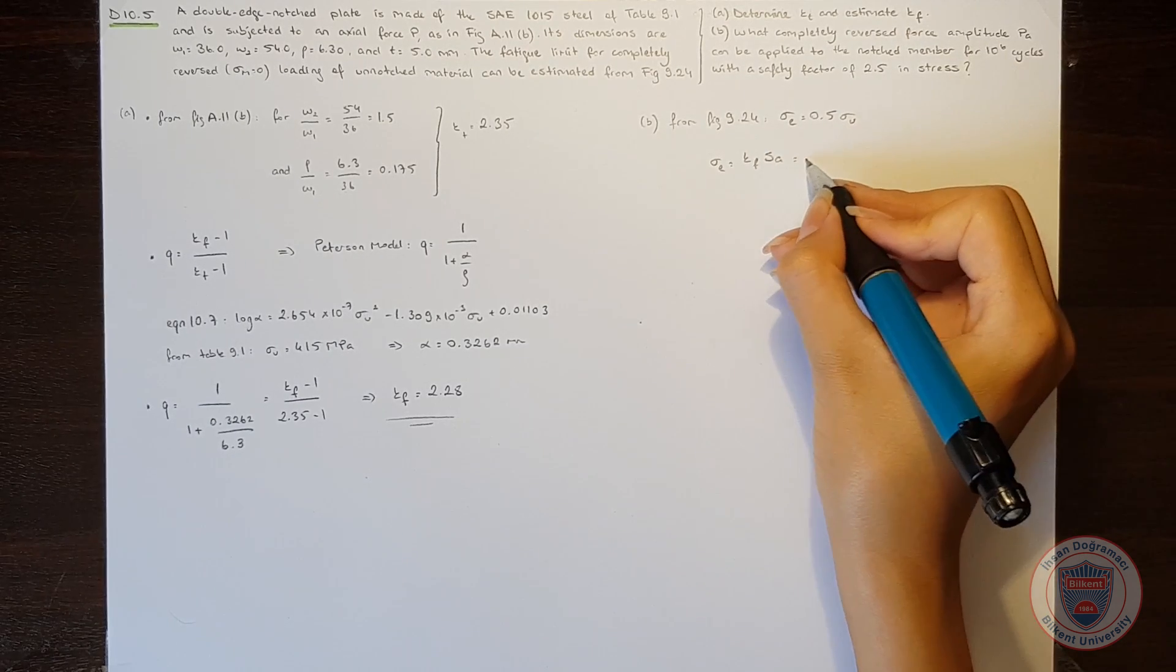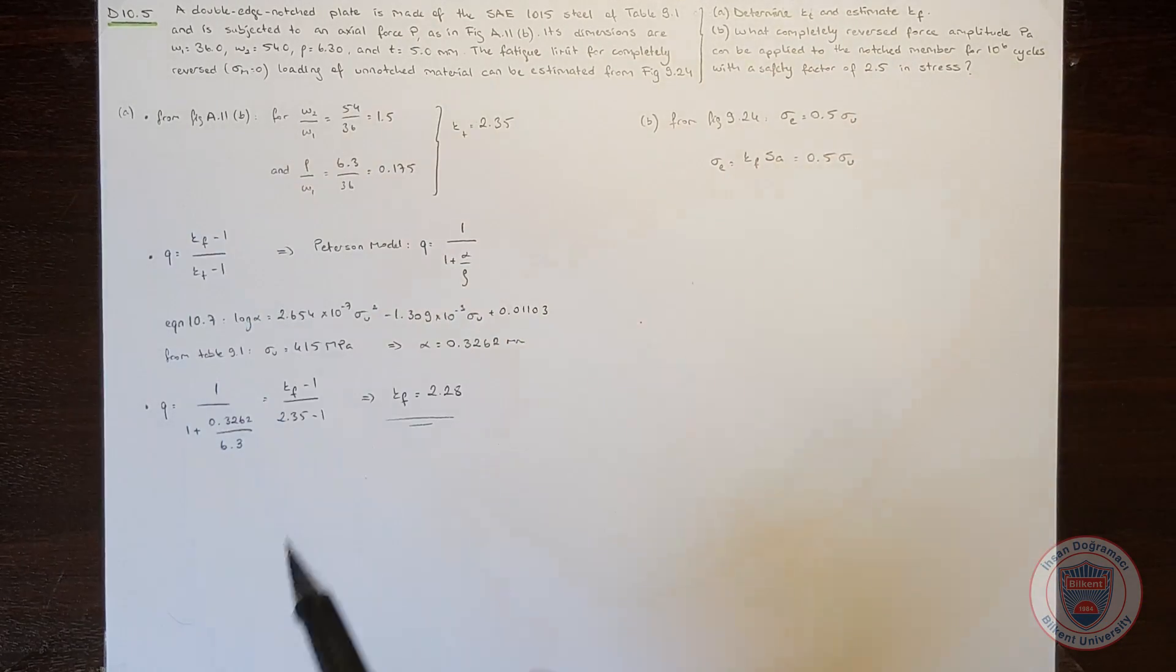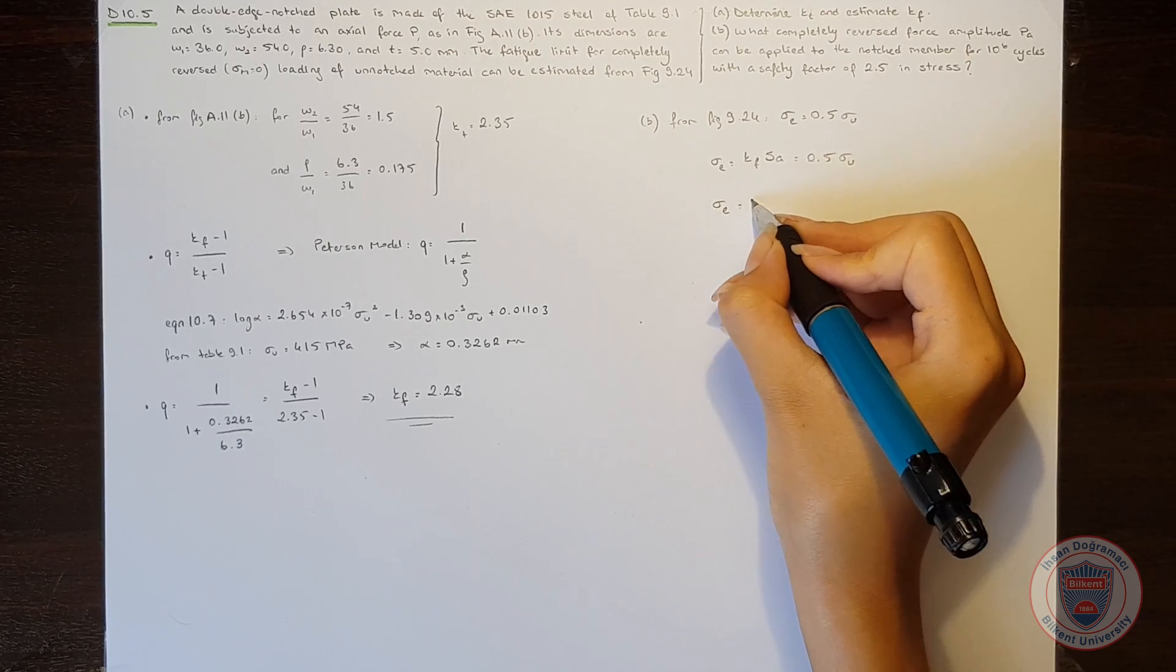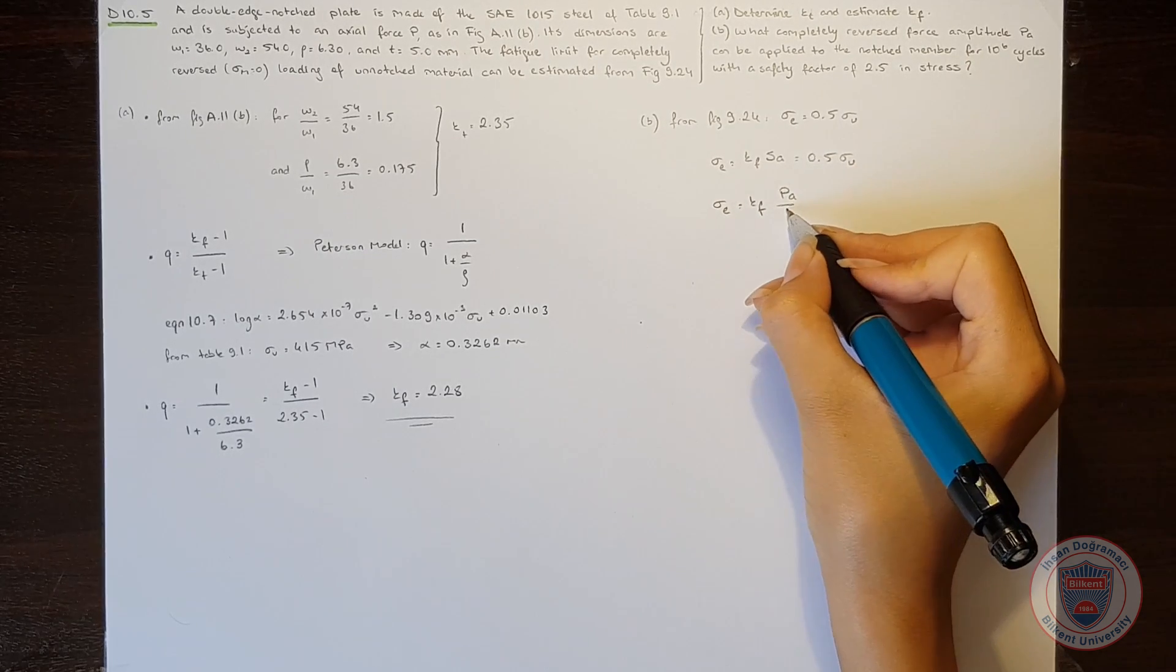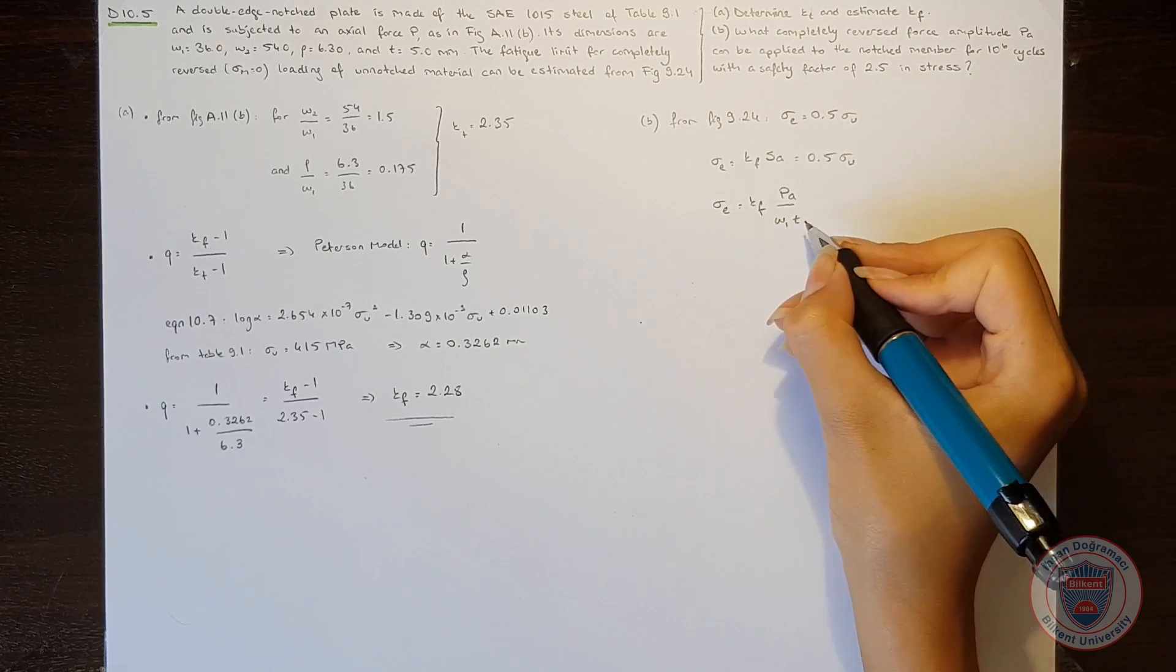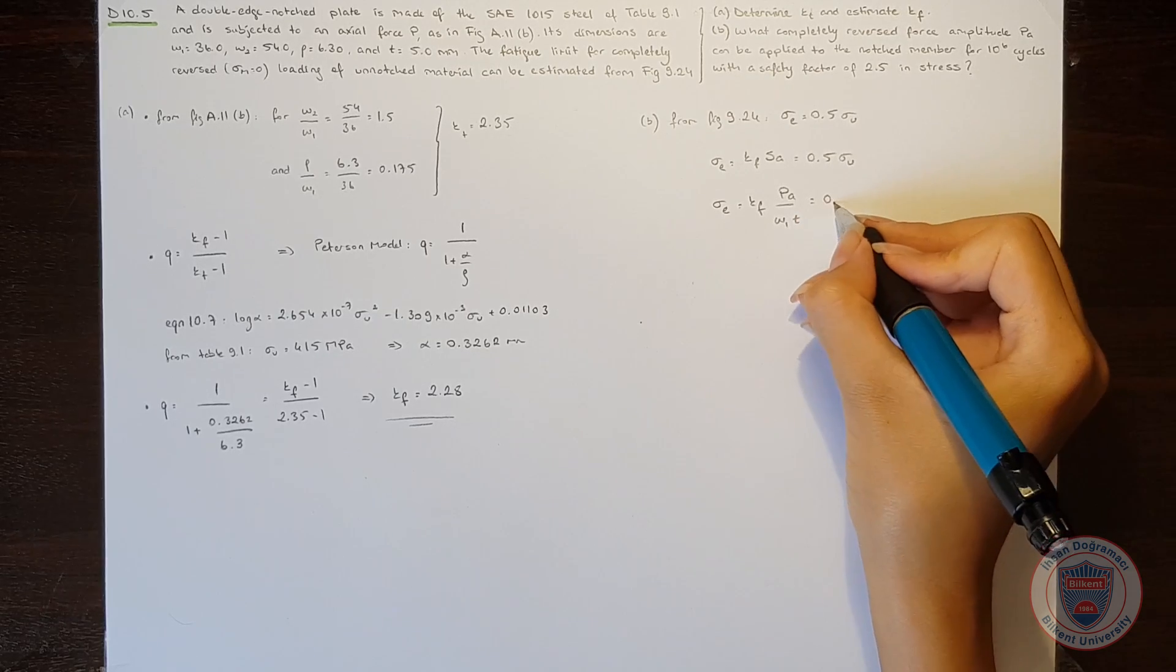And we also know that sigma e is equal to the fatigue notch factor times Sa, and again, it is equal to 0.5 times sigma u. We know that from figure A.11,